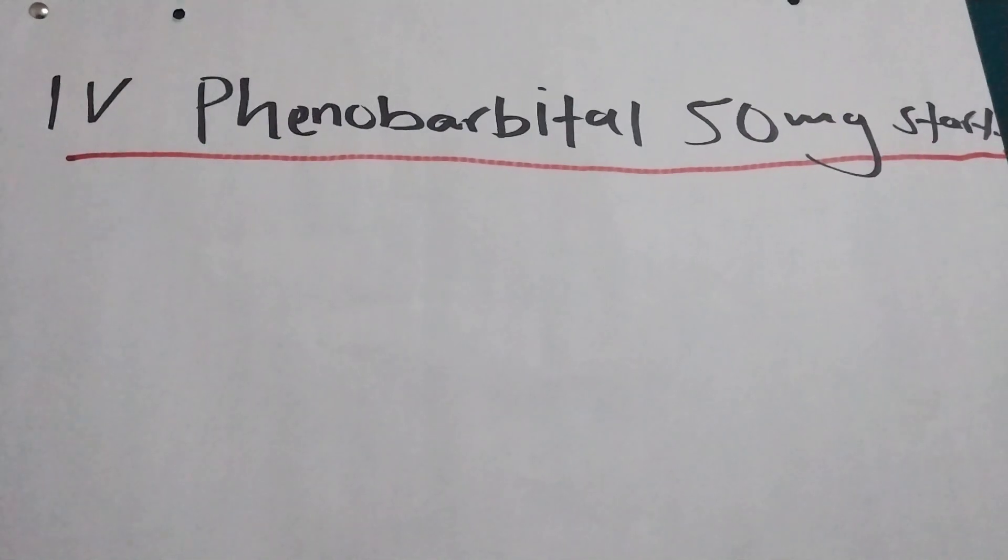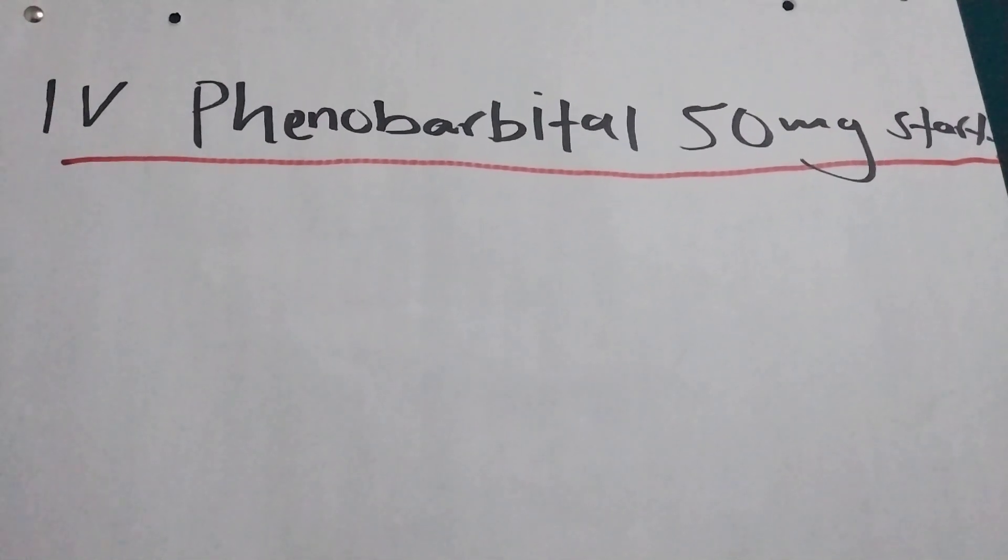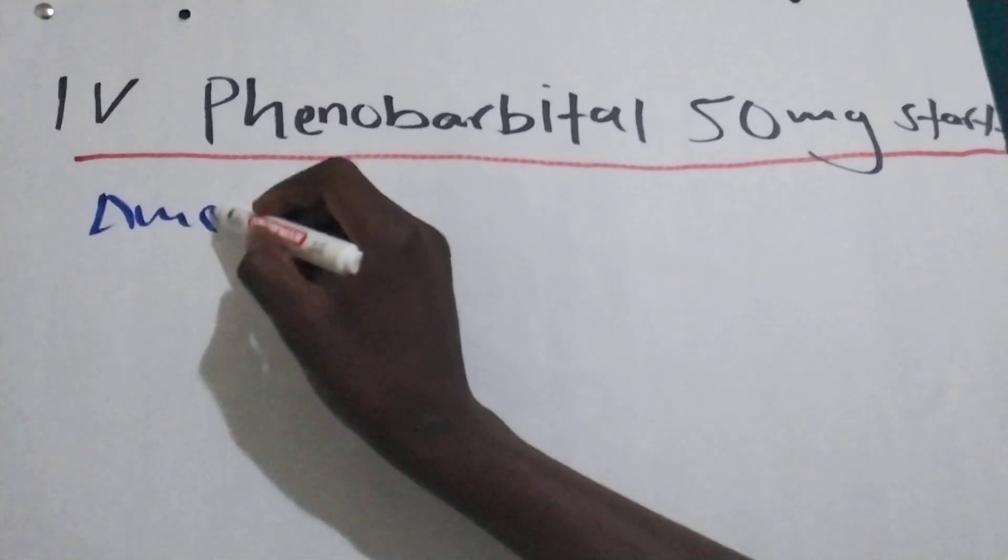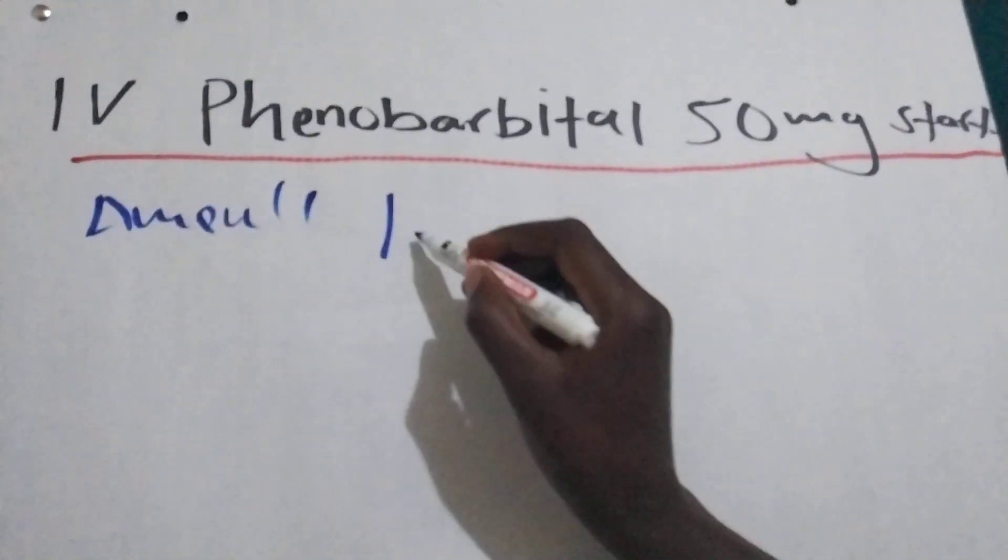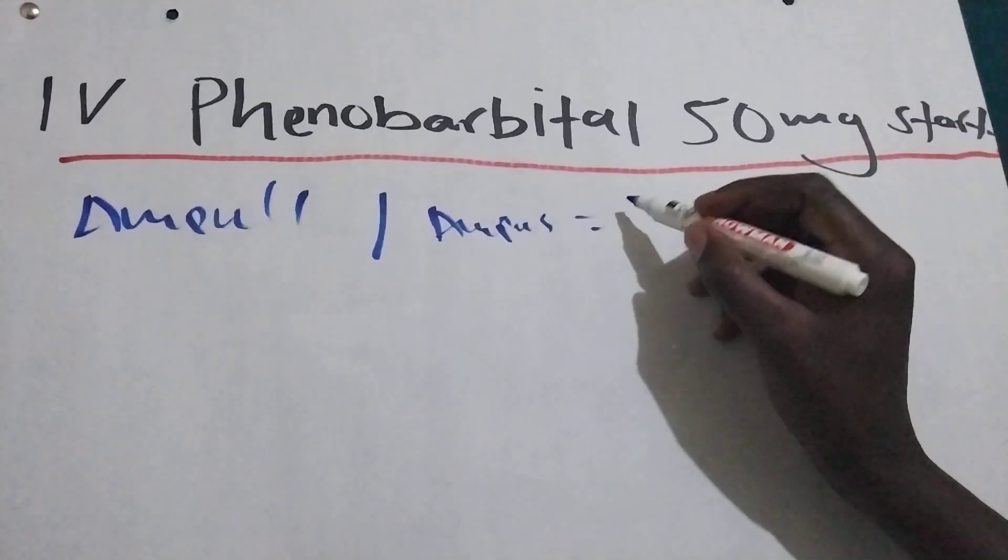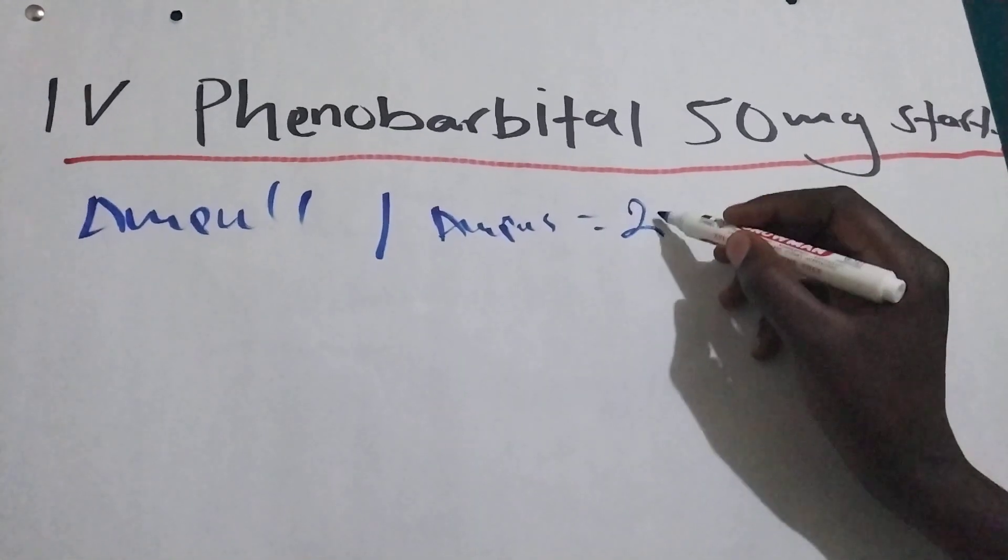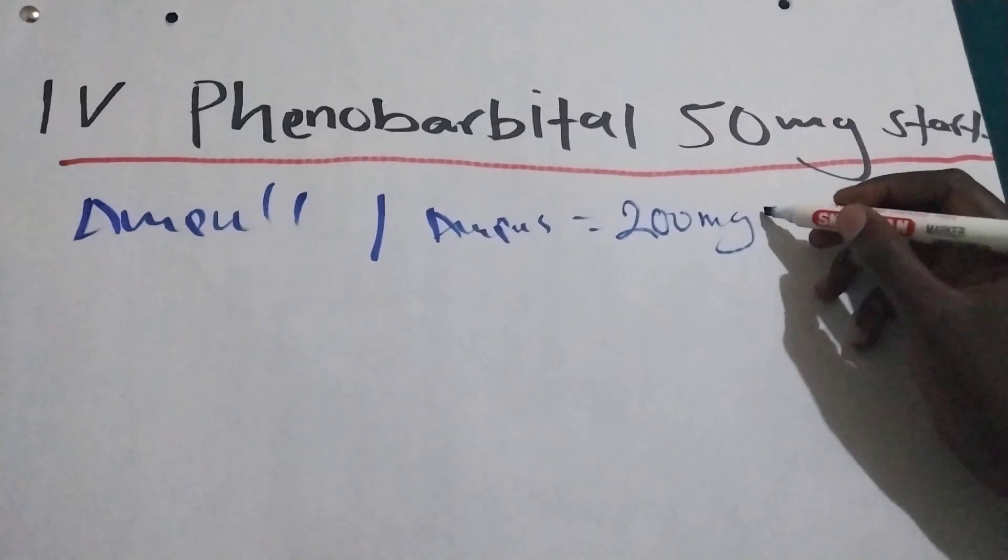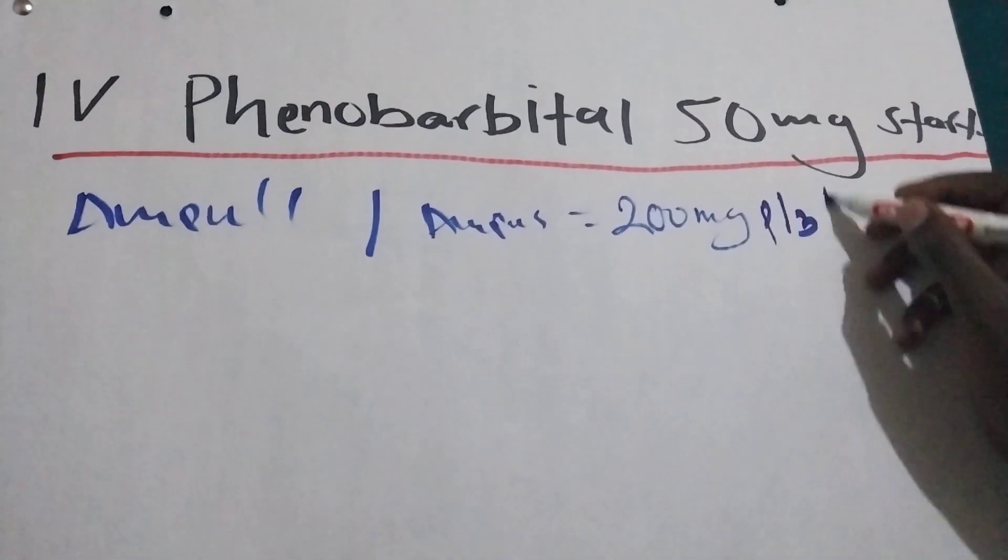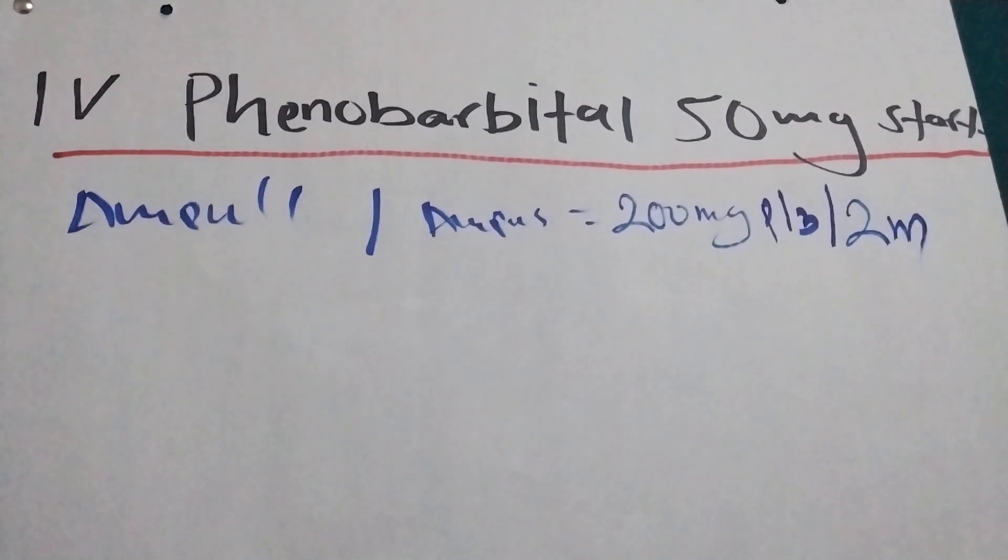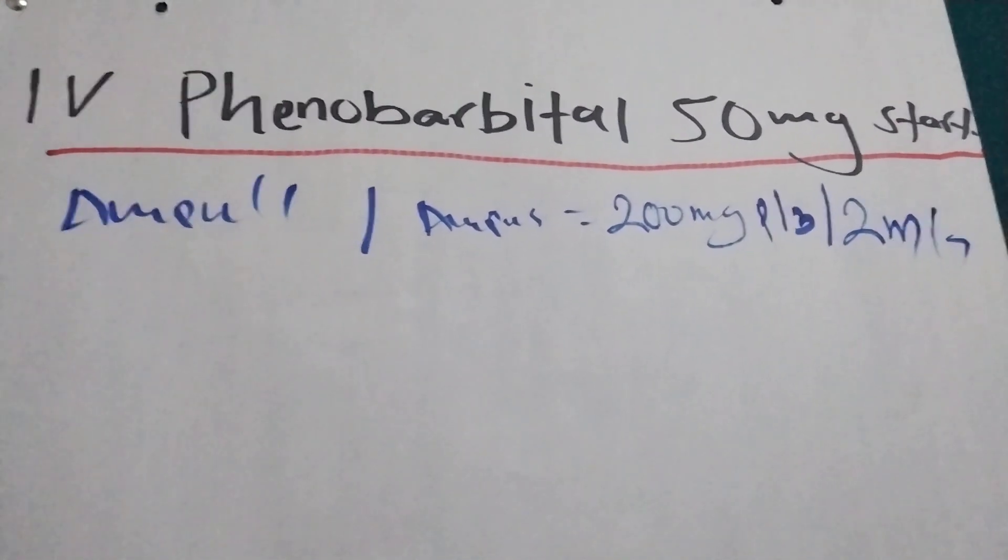Phenobarbital is in ampules. One ampule is equal to, it's having 200 milligrams of phenobarbital in two mls. Let me show you how this works.